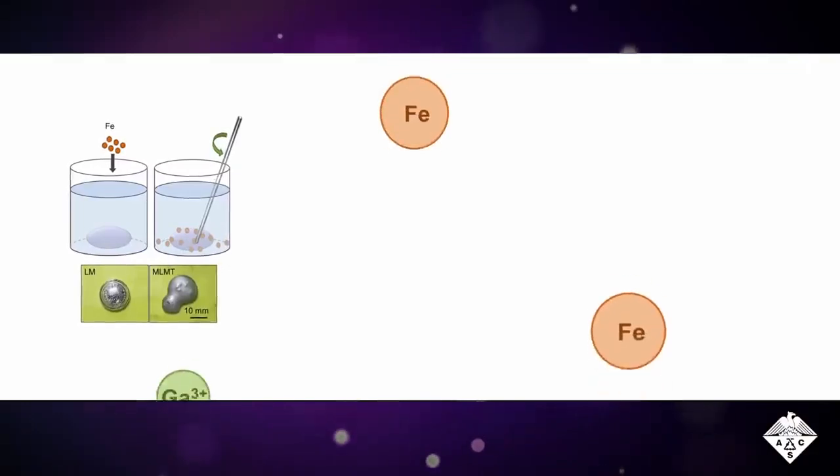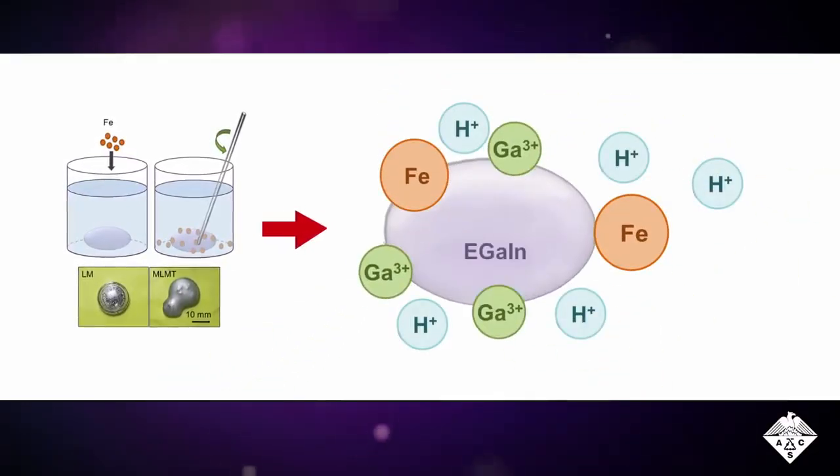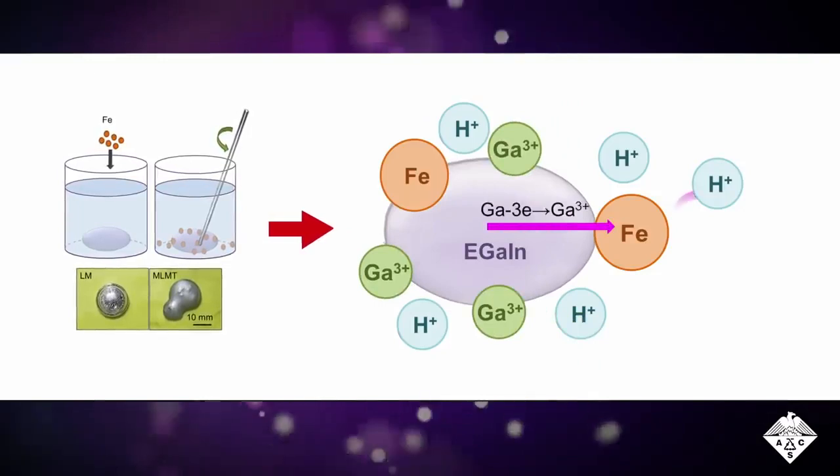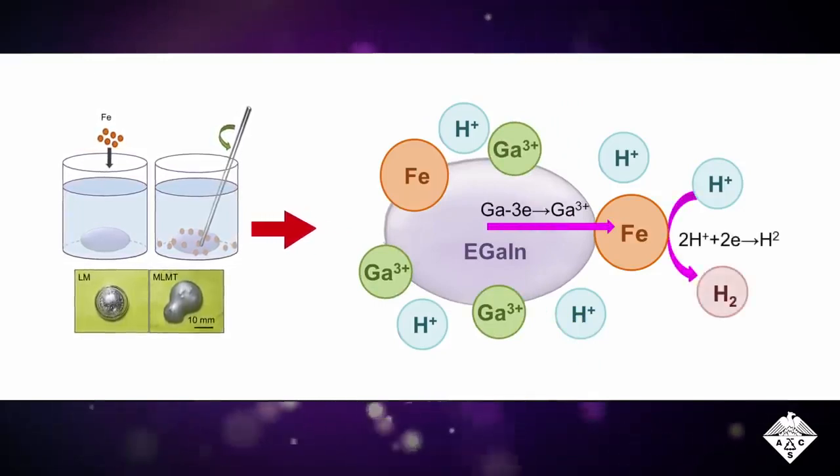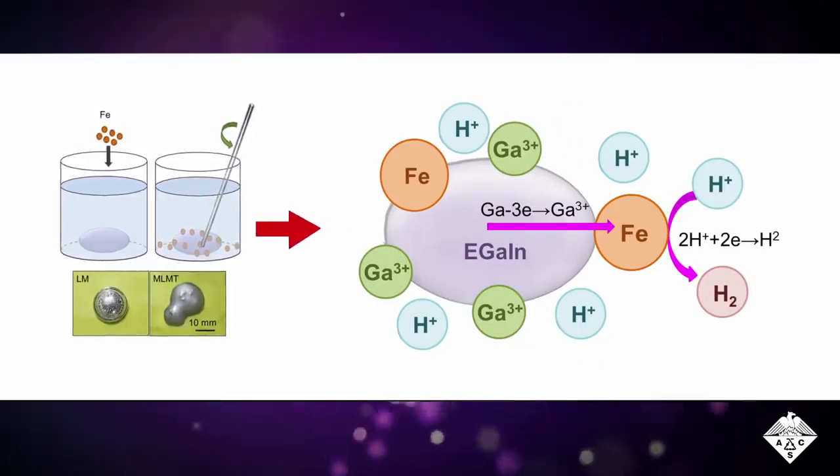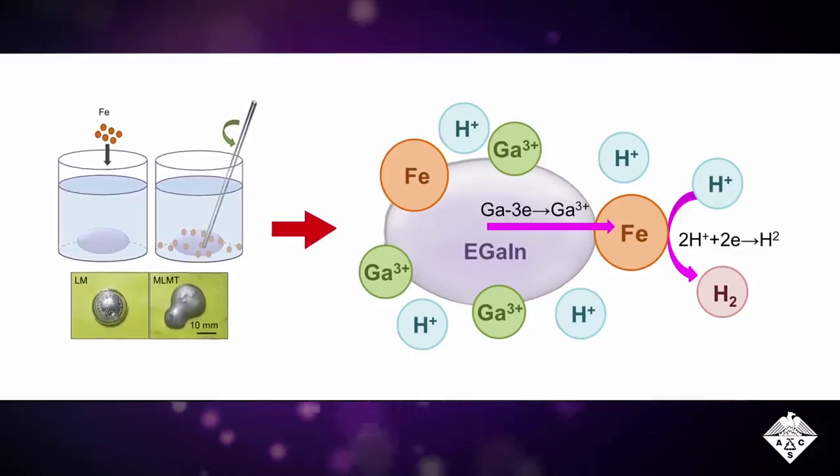They added iron particles to a droplet of a gallium, indium, and tin alloy immersed in hydrochloric acid. A gallium oxide layer formed on the droplet surface, which lowered the surface tension of the liquid metal.